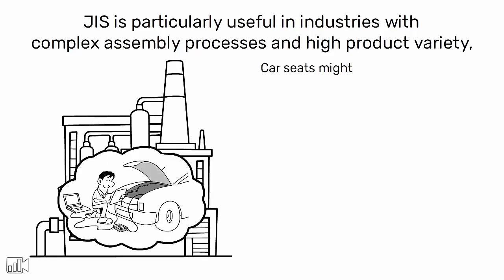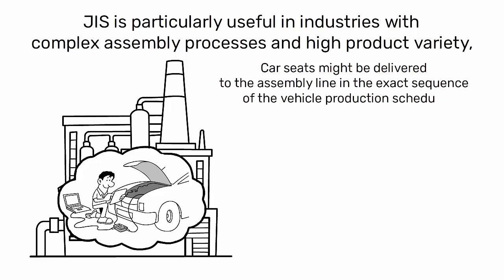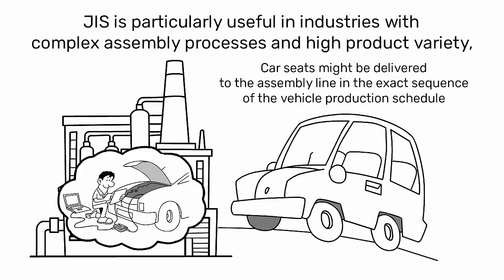For example, car seats might be delivered to the assembly line in the exact sequence of the vehicle production schedule, ensuring that the right seat is available for each car as it comes down the line.